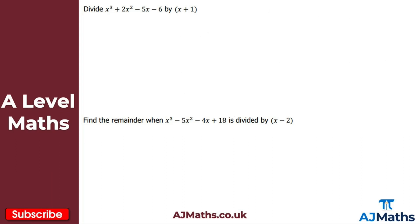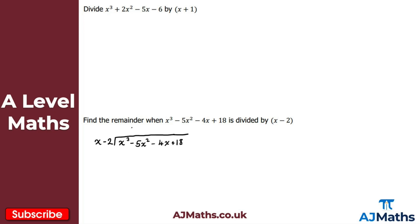Let's clear the screen and move on to the second example. For this one we want to find the remainder. We're going to repeat the algebraic long division process: set up the bus stop with x cubed minus 5x squared minus 4x plus 18 underneath, and x minus 2 on the outside.